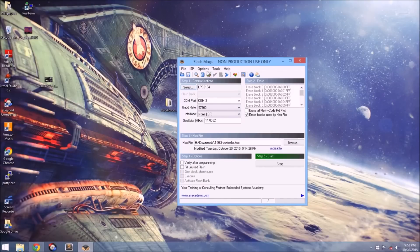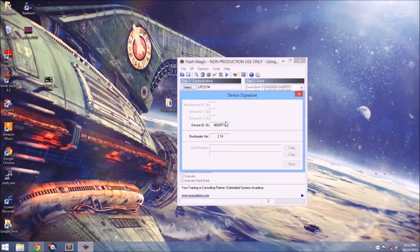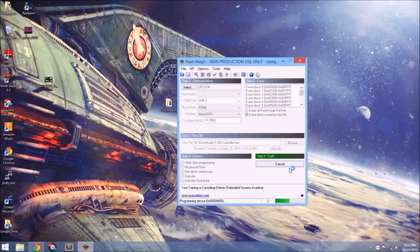Next, go to ISP and choose Read Device Signature. If it reads successfully, then you know you are connected to the microcontroller. Close the signature window and ensure erase blocks used by hex file is checkmarked. Make sure this hex is the target hex file that you downloaded from Unified Engineering. When you're all set, go ahead and flash the hex file to the LPC microcontroller.